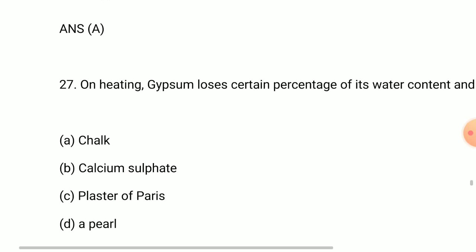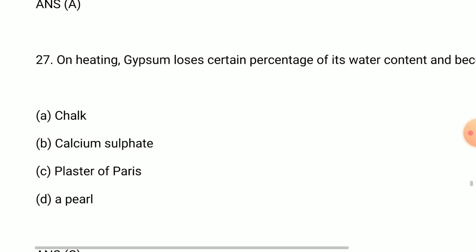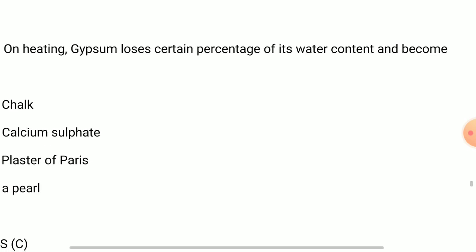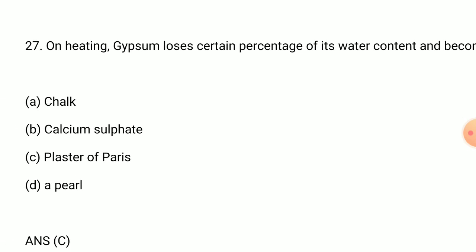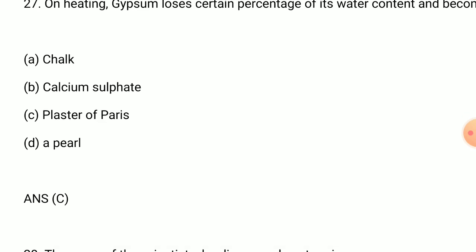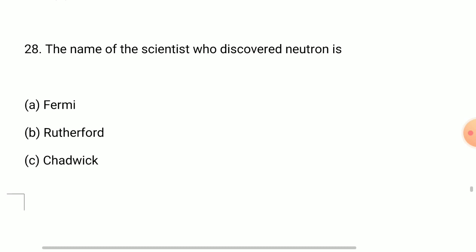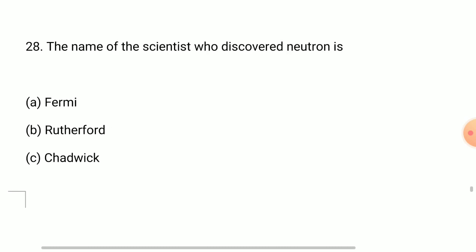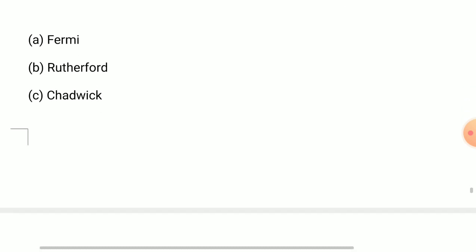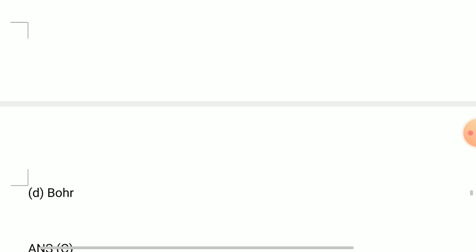Question number 27: on heating, gypsum loses certain percentage of its water content and becomes answer is plaster of Paris. Question 28: the name of scientist who discovered neutron is answer is Chadwick.